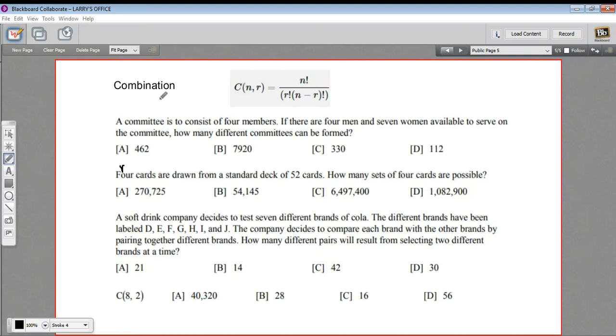In these problems, we're dealing with something called combination. This is a way to calculate how many ways there are to put together groups. You've seen permutation already. Permutation is like combination, but we use it in situations where the order of things is important. With combination, the order doesn't matter.